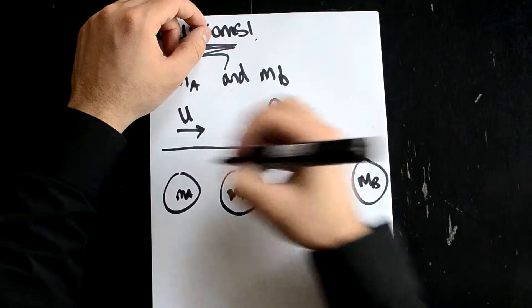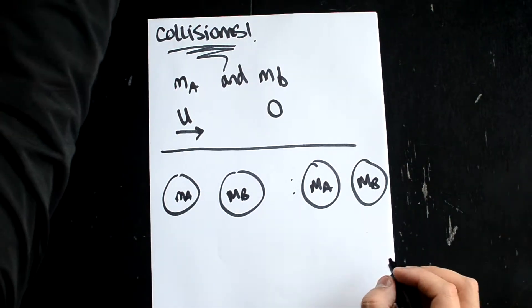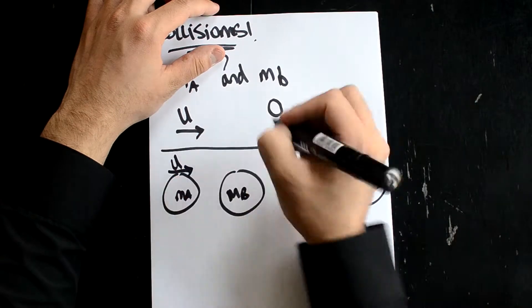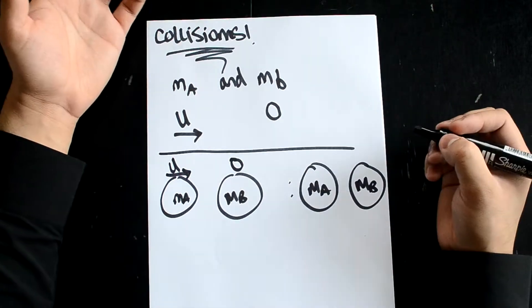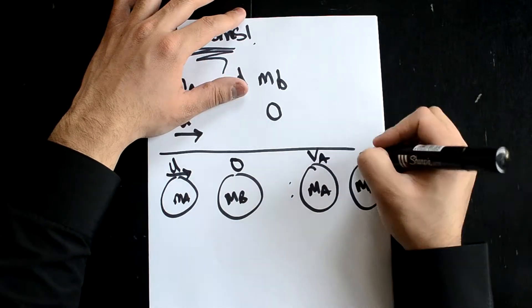ma, mb, ma, mb - the two dots denote before and after. Before the collision you have u going in this direction, this being nothing, and afterwards we don't know the values so we can just say va and vb.